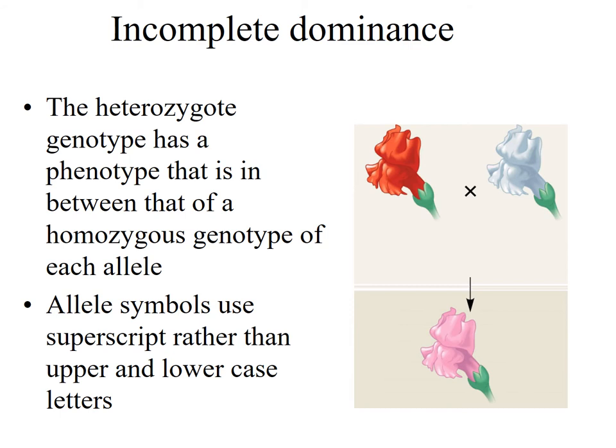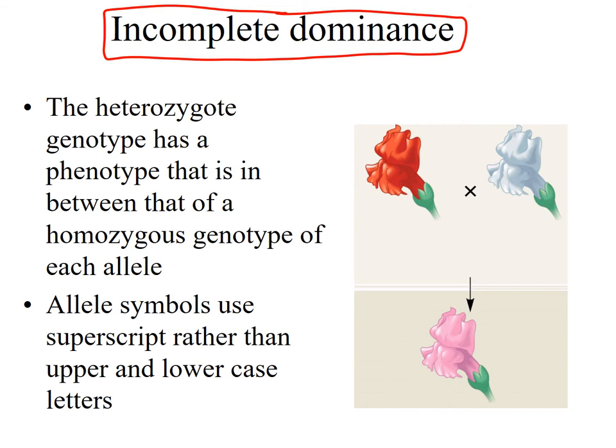Sometimes the interaction is not complete between two alleles. When it is not complete, one of the results in a heterozygote is that the phenotype is in between the two phenotypes of the two alleles. And this is what is called incomplete dominance. The heterozygote genotype has a phenotype that's in between that of the homozygous genotype of each of the individual alleles.